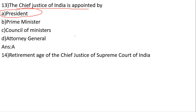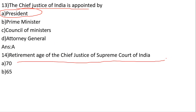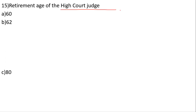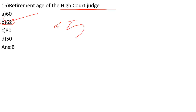Retirement age of the Chief Justice of the Supreme Court of India: options are 70, 65, 80, 50. The correct answer is B — 65 years. Retirement age of High Court judges: options are 60, 62, 80, 50. Correct answer is B — 62 years. Supreme Court retirement age is 65 and High Court is 62.